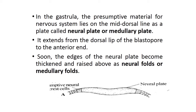The presumptive nervous system material lies on the mid-dorsal line of the animal pole as a plate, called the neural plate or medullary plate. This plate arises from the micromeres on the dorsal side and extends from the dorsal lip of the blastopore to the anterior end of the embryo.